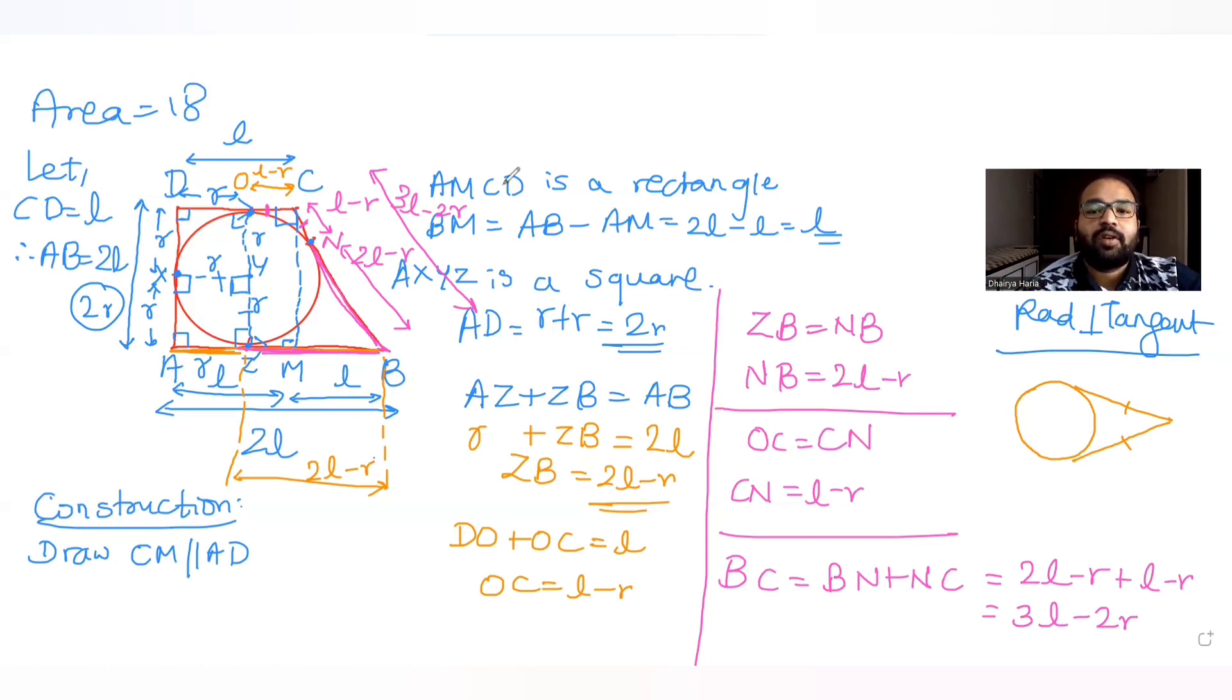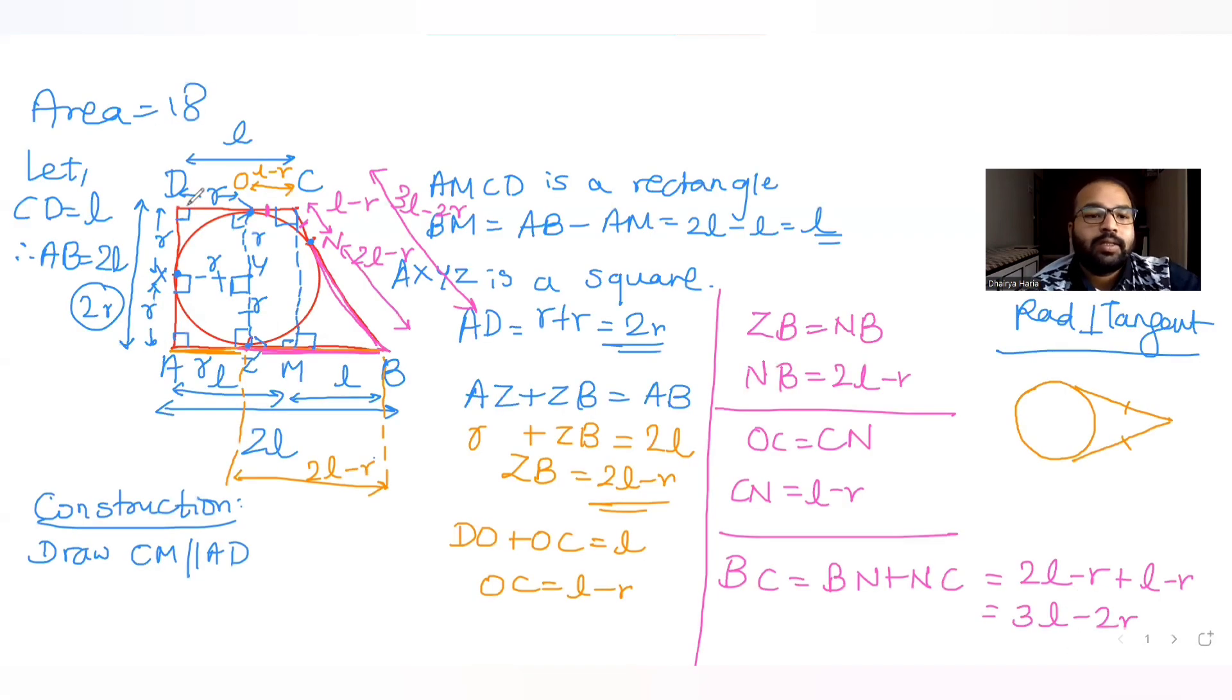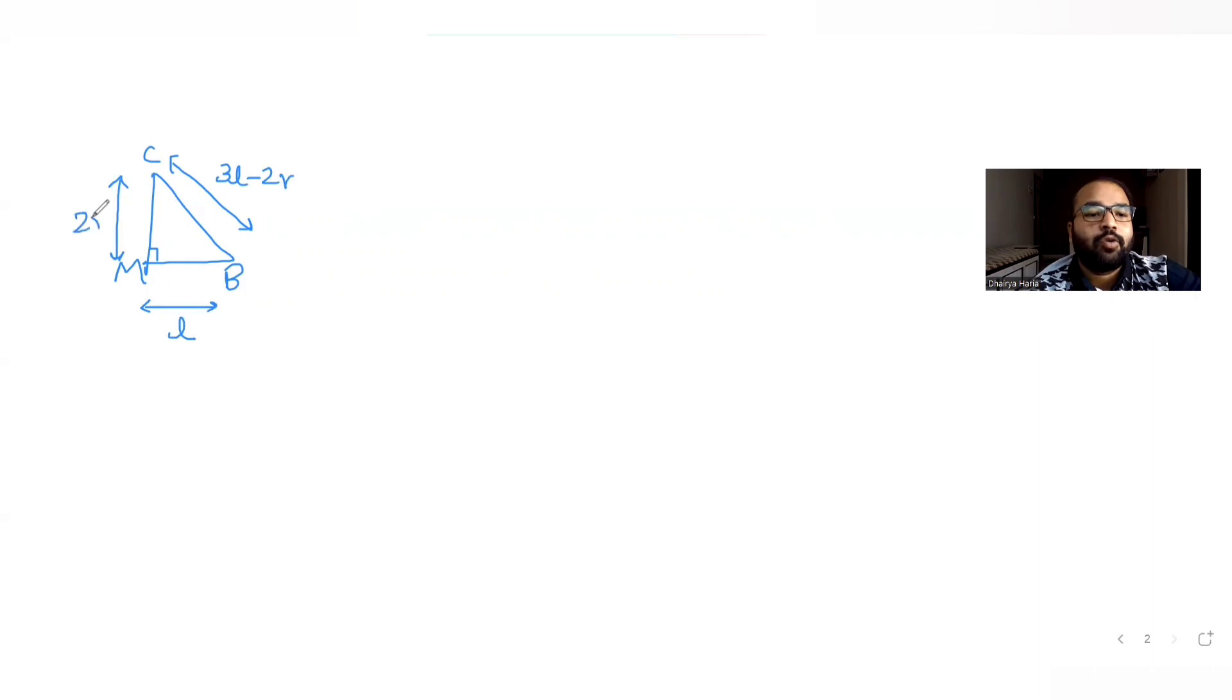Now let's see further. If you see this triangle now, if you see this triangle, if this is 90, this also becomes 90 and that makes it a right angle triangle CMB. I'll draw it on the other page. So there is a right angle triangle CMB with the hypotenuse here becoming 3L minus 2R. MB becoming L and CM if you see, CM is nothing but equal to AD because it is a rectangle and since AD is 2R, CM also becomes 2R. So this makes it 2R.